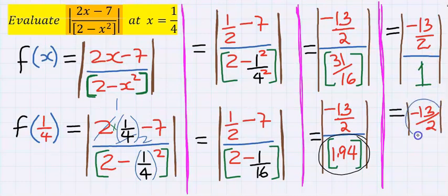Anything divided by 1 will return back the value without the 1. Minus 13 over 2 is enclosed in absolute value function. An absolute value function rejects negative, hence you now have 13 over 2, which is our final answer.